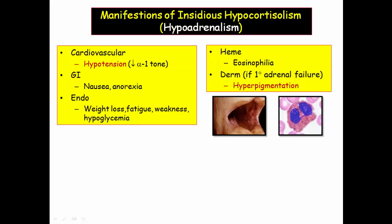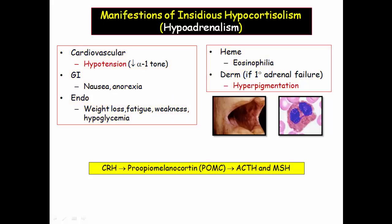The NBME seems more interested in patchy pigmentation in places such as the lips and buccal mucosa. In primary adrenal failure, CRH stimulates POMC, which is cleaved into ACTH and melanocyte-stimulating hormone (MSH). The hypothalamus responds to adrenal failure with increased CRH, driving this pigmentation through the traditional mechanism, as opposed to ACTH-dependent hypercortisolism where pigmentation relates to ACTH homology with MSH.